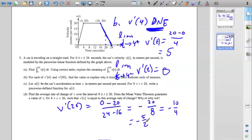So this is the acceleration, because the derivative of velocity is acceleration, so acceleration at 20 seconds is negative 5 over 2 meters per second per second, or per second squared.